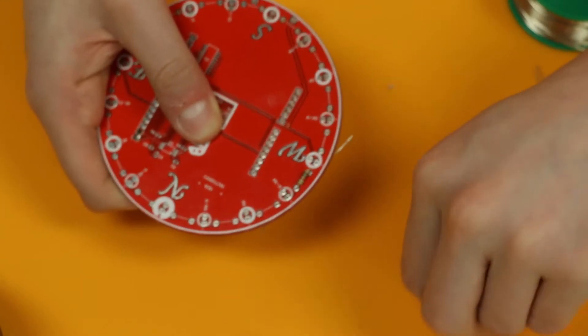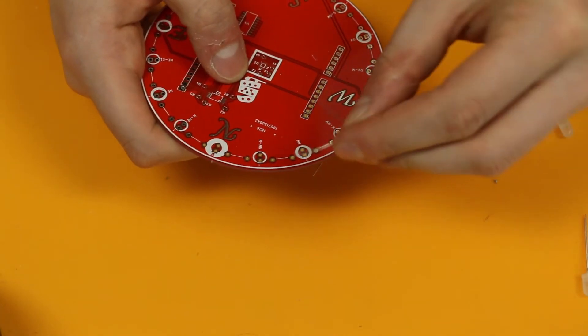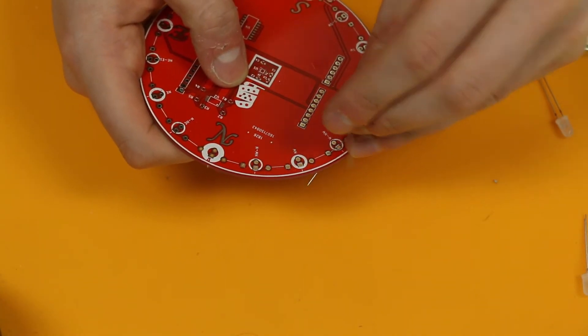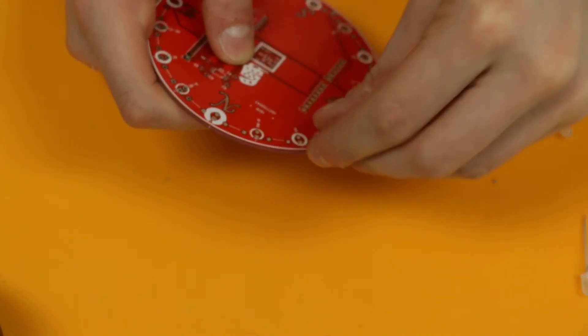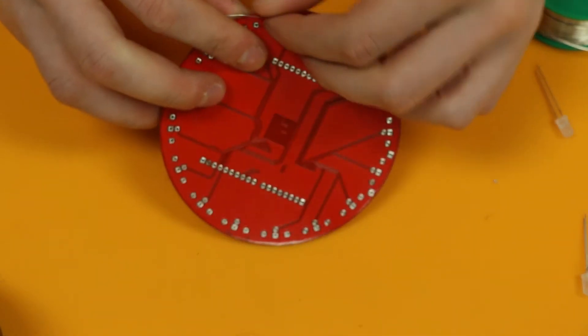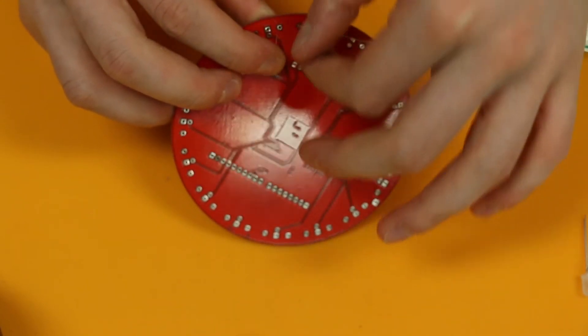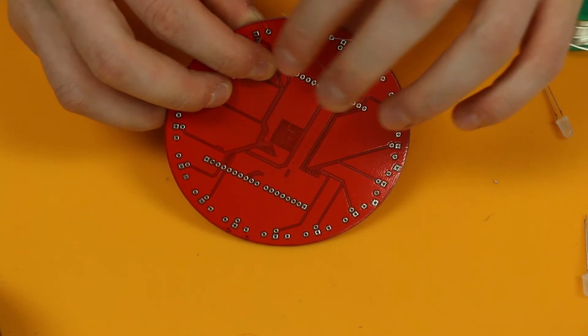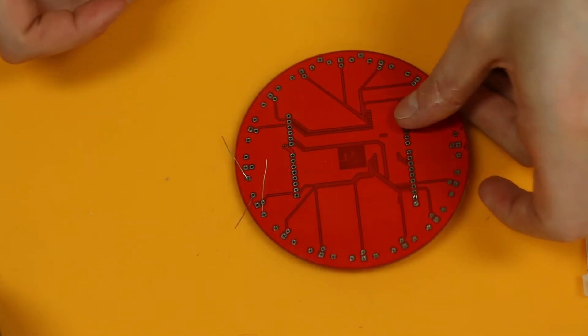So a resistor, and another resistor, and I've pushed them through the board. And on the other side, bent their leads so they will stay in place. And now they're ready to solder.